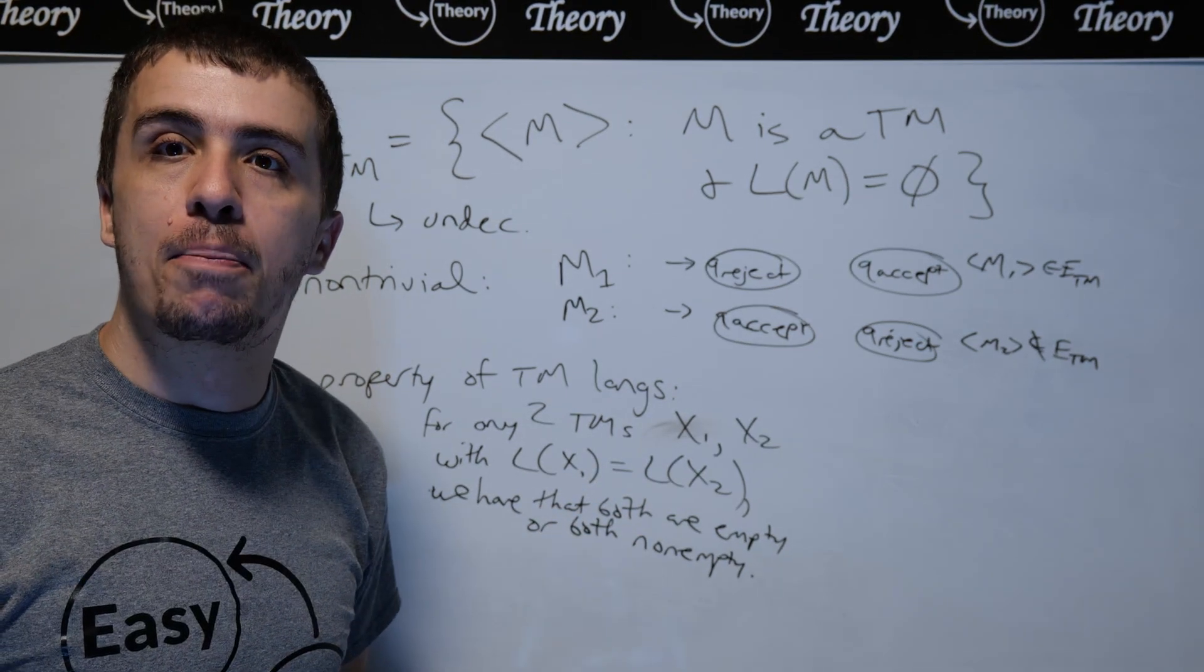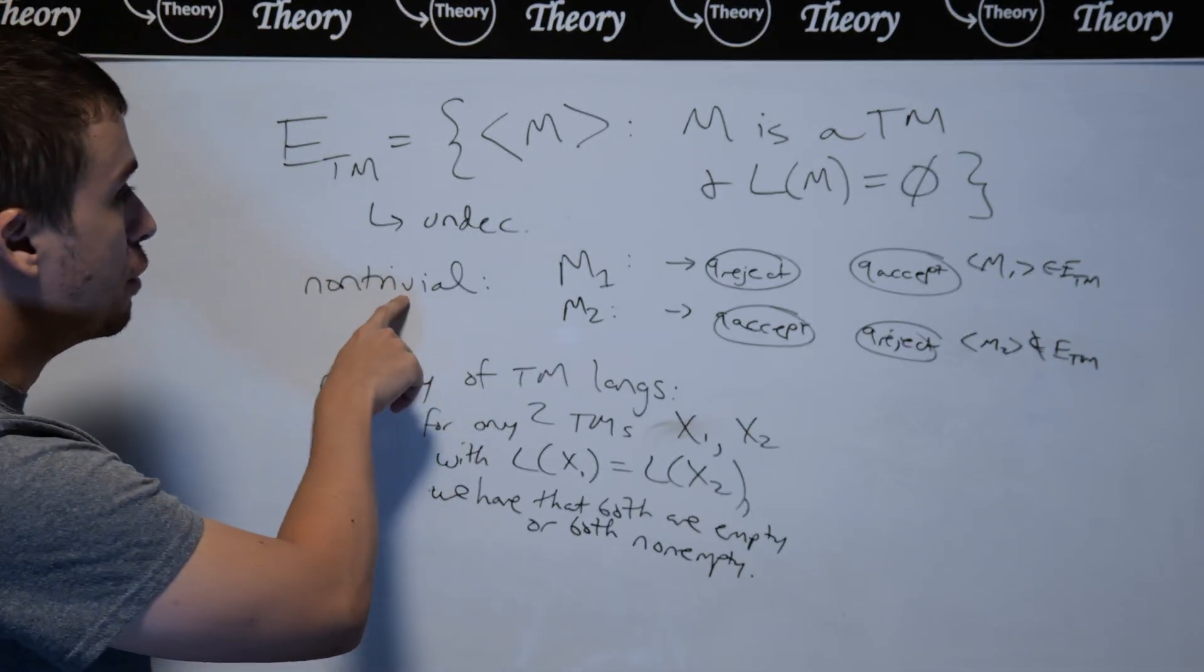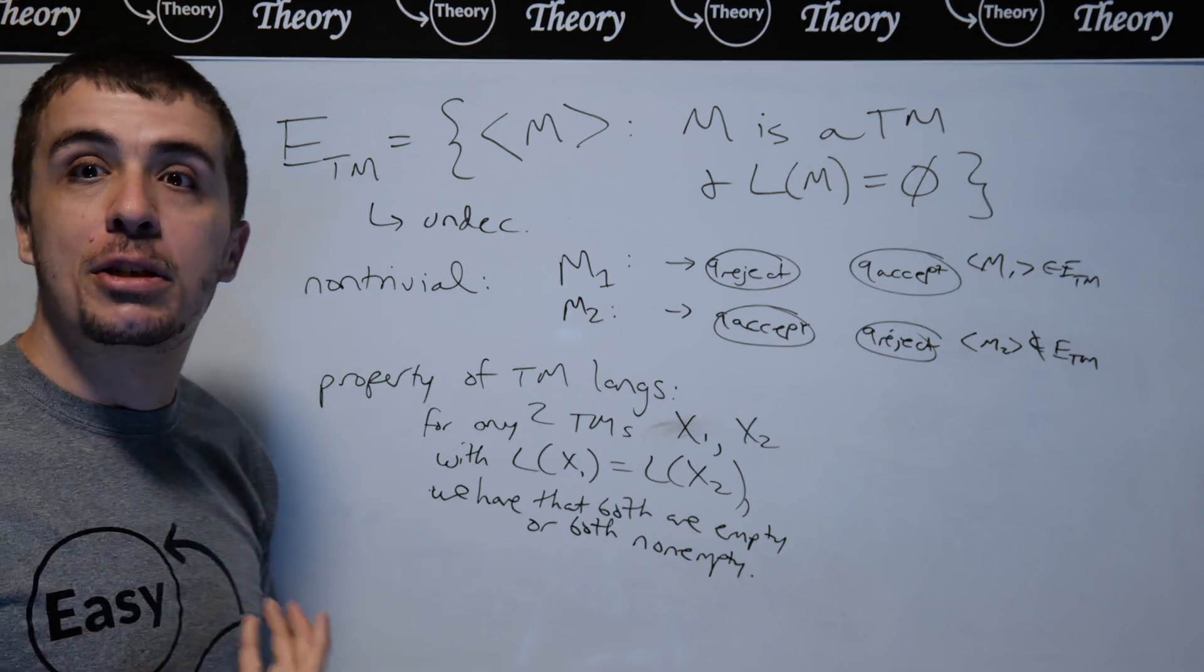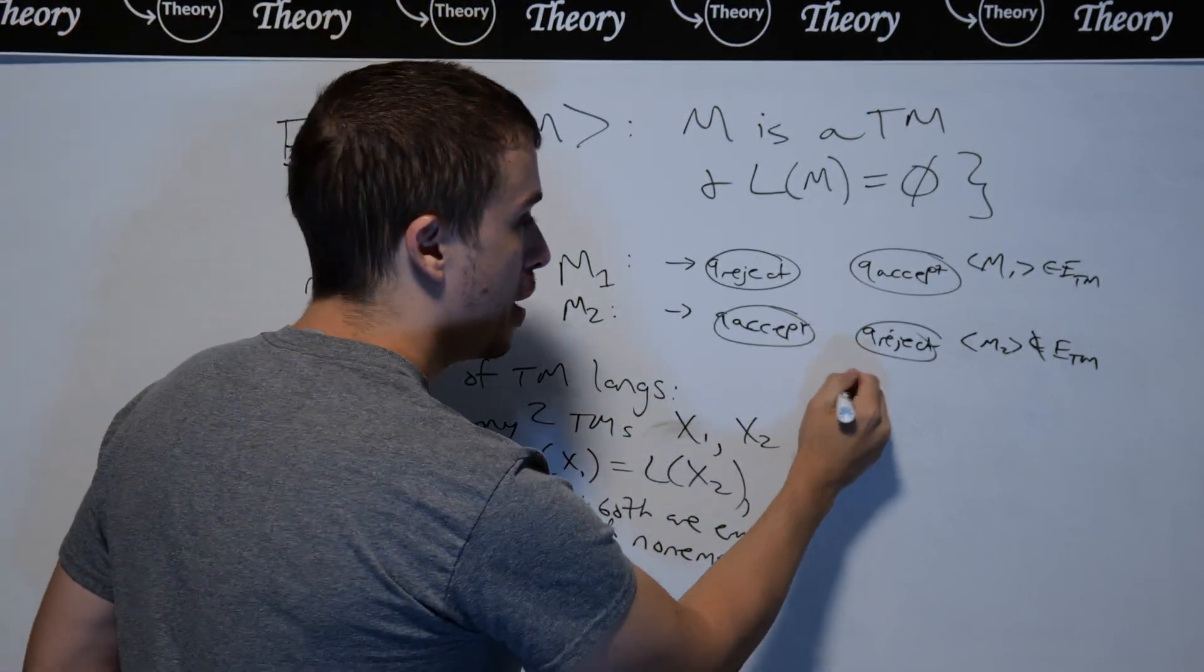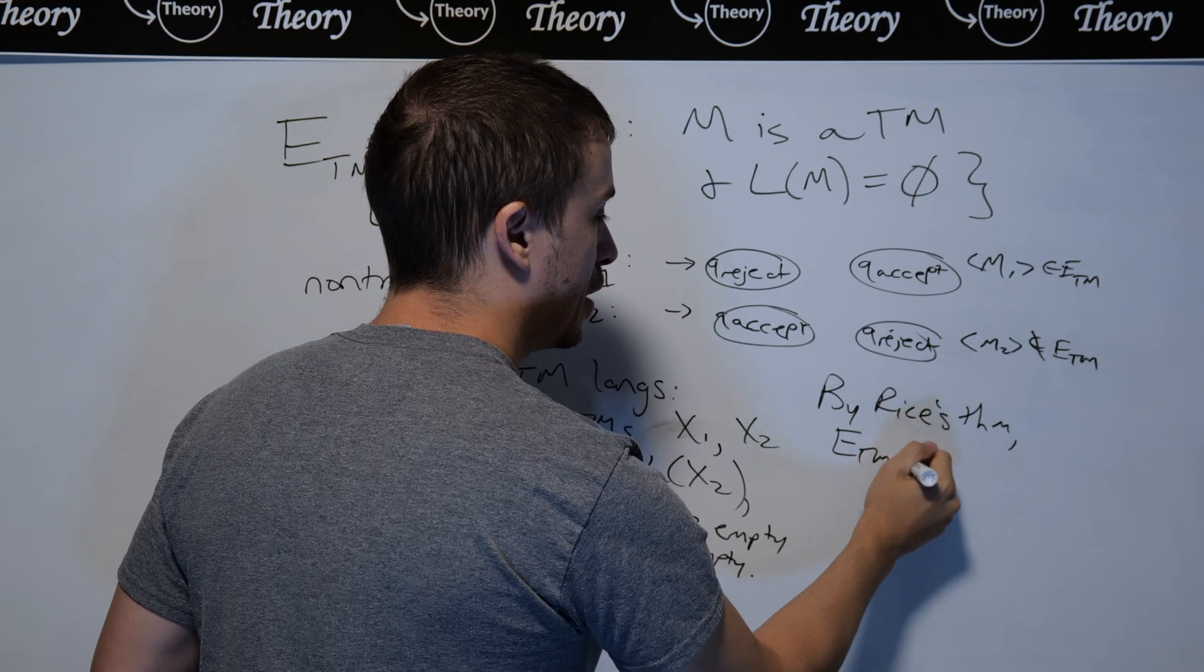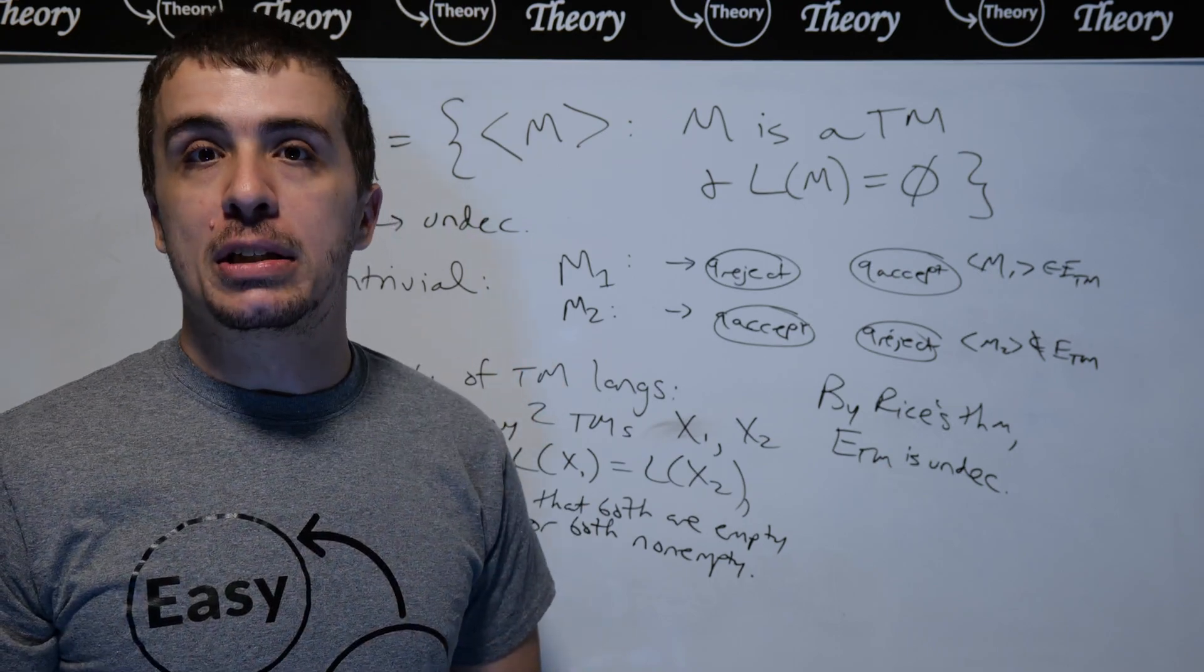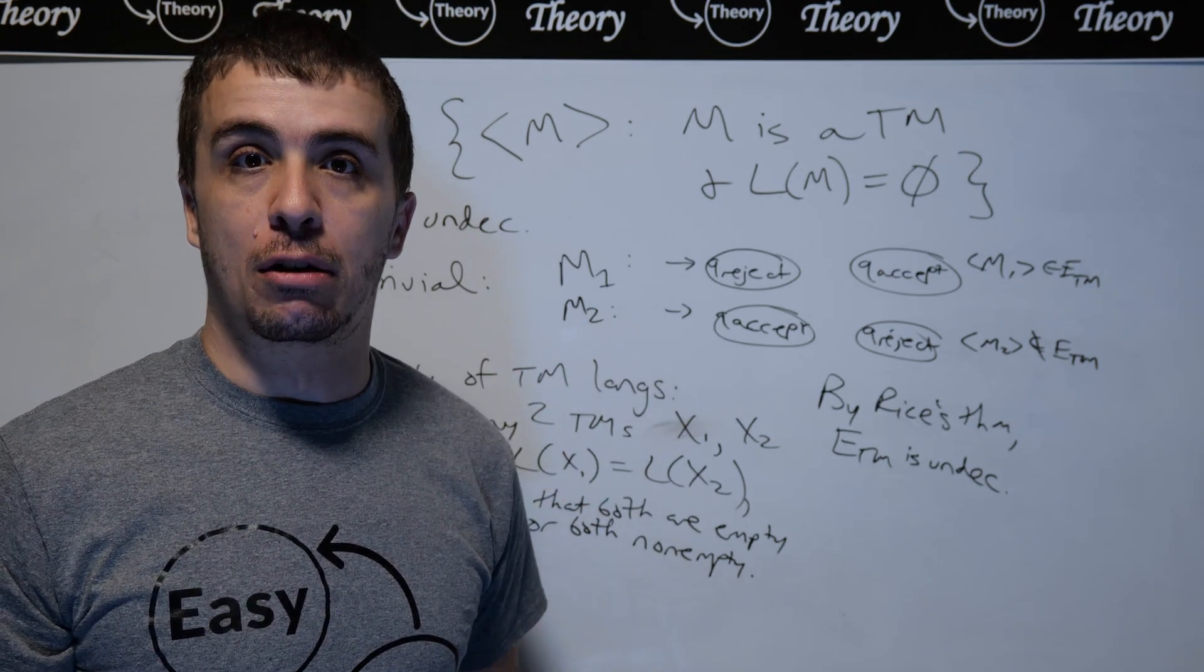And then therefore, this is a property of Turing machine languages. And since we showed it was non-trivial before and that it's a property of Turing machine languages, by Rice's theorem, this language is undecidable. And so therefore, that is a quick way of showing that ETM is undecidable via Rice's theorem.